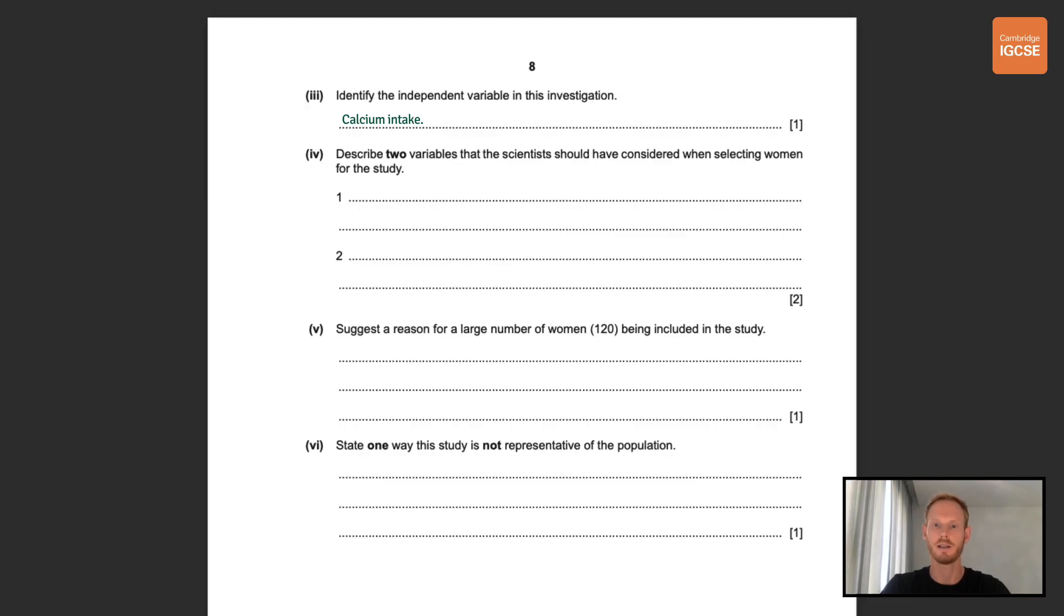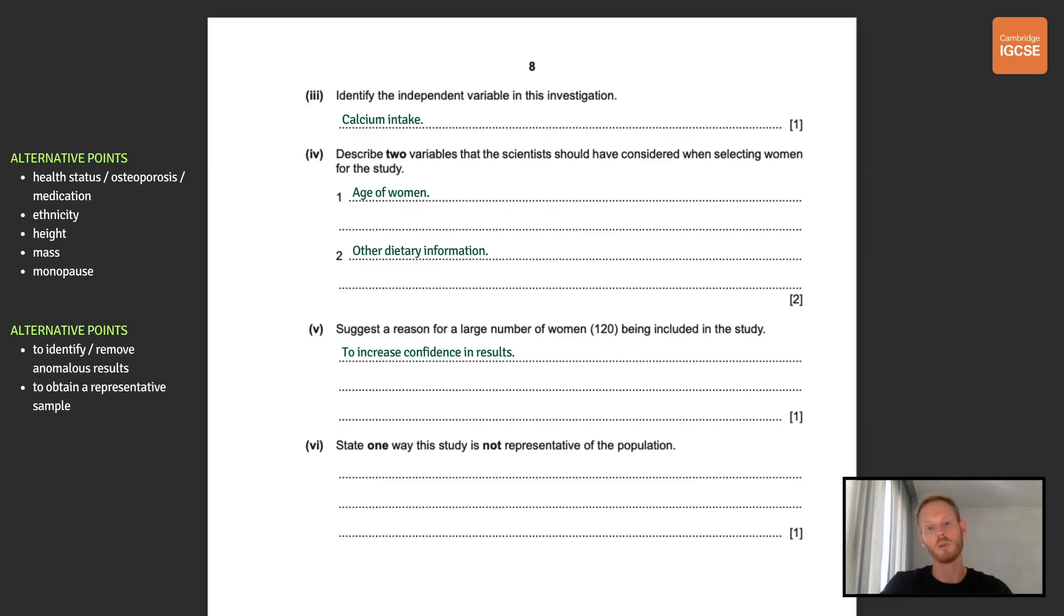Next you need to identify the independent variable in this investigation and that is of course calcium intake. Describe two variables that the scientists should have considered when selecting women for the study. So basically here we need to list any factors that might also influence the dependent variable, the change in bone density. So I've gone for the age of women and other dietary information. Other points in the mark scheme include health status including whether the participants were using medication or had a bone related condition like osteoporosis, their ethnicity, height, mass and whether they were pre or post menopause. The next question is to suggest a reason for the large number of women being included in the study and I've put to increase confidence in results. If we only tested five women it would be very difficult to draw conclusions from our data but with big numbers we can be much more confident that what we're seeing isn't simply a product of chance or error. You could have also put to identify anonymous results or to obtain a sample that is representative of the population.